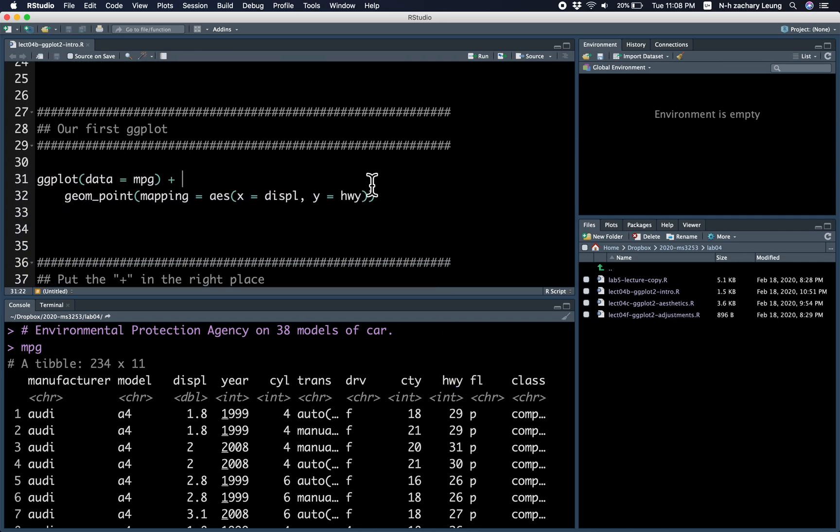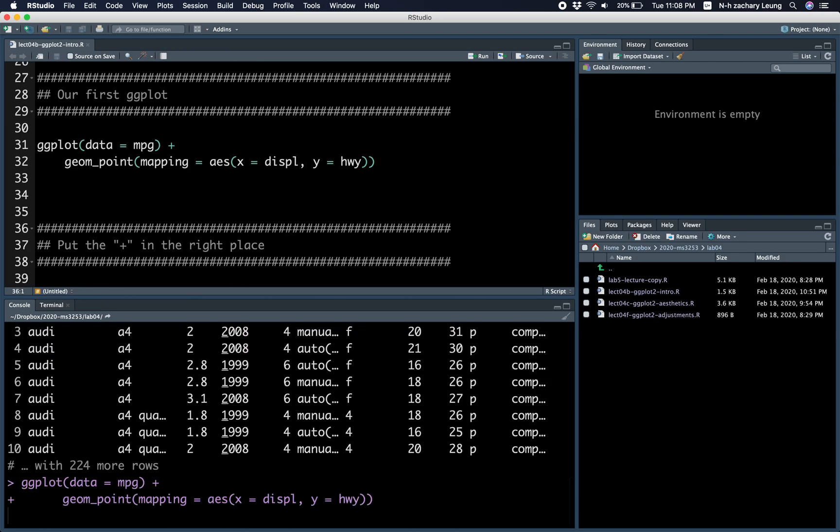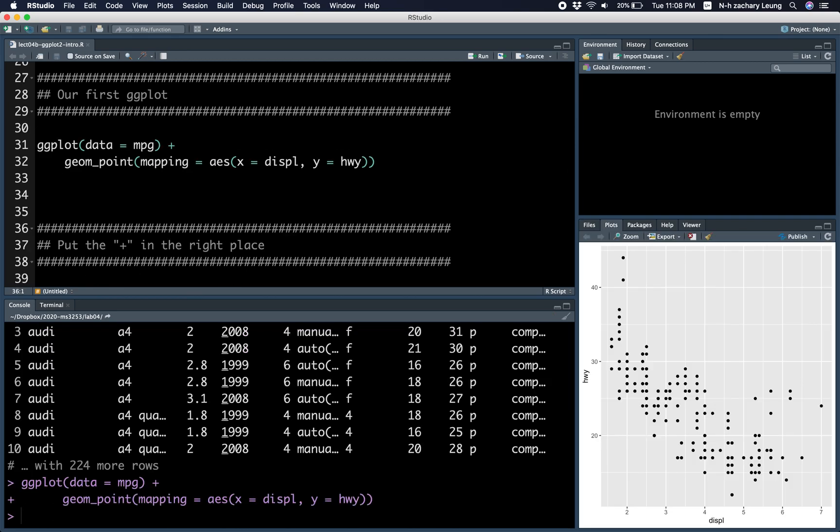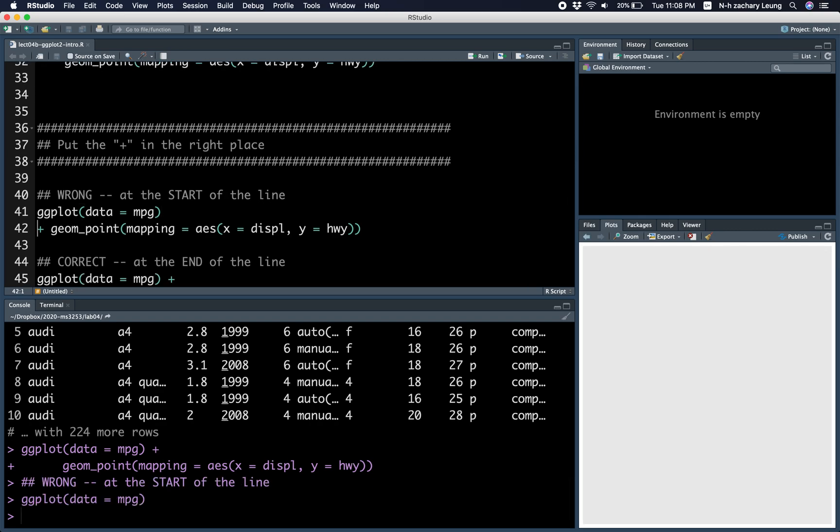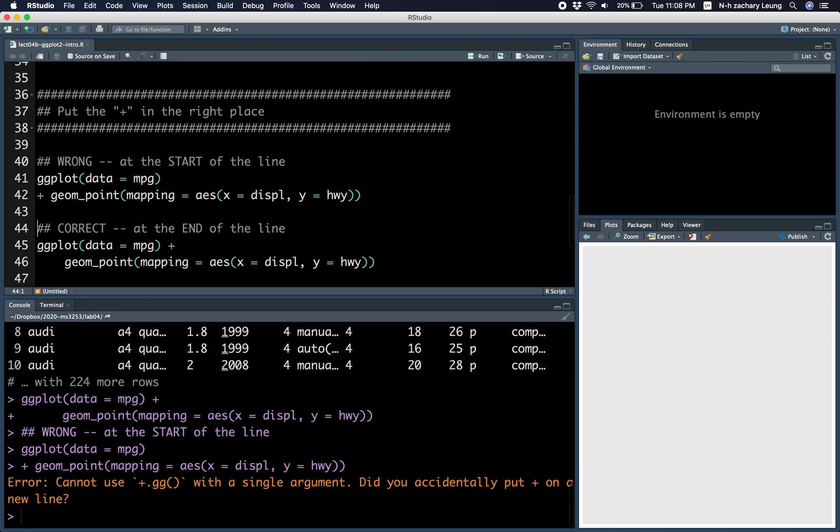This is the first ggplot. Command enter or control enter for you Windows people. And if you put the plus in the wrong place, then you will basically be splitting that single statement into two statements. The first statement doesn't do anything. The second statement gives you an error that tells you basically what you did wrong.